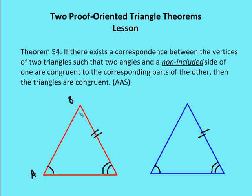So in this case, I have angles A, B, C and angles D, E, F. Angle A is congruent to D, and angle C is congruent to F. By the no-choice theorem, angle B must be congruent to angle E, which tells me by angle-side-angle — using side BC and EF, and angles C and F — that I have two congruent triangles. So by angle-angle-side, two triangles are congruent if I have two angles and a non-included side.